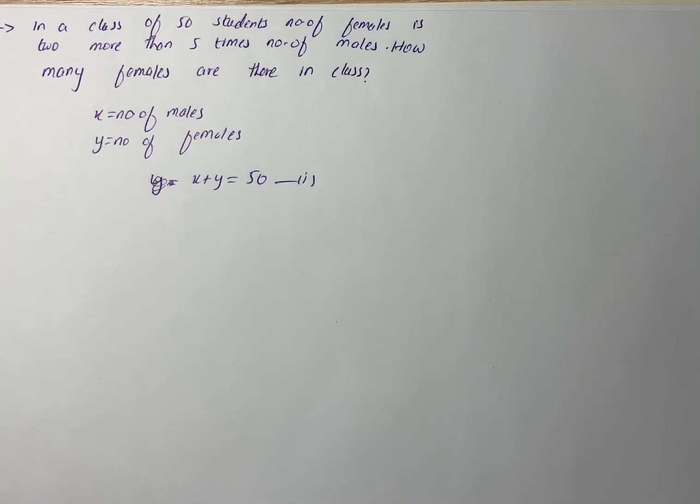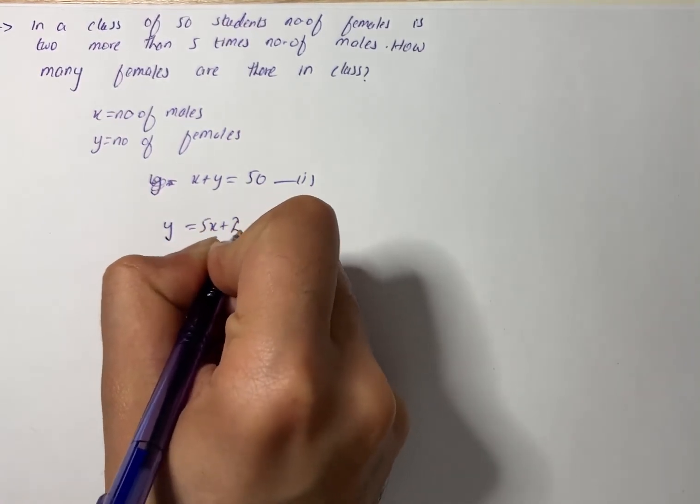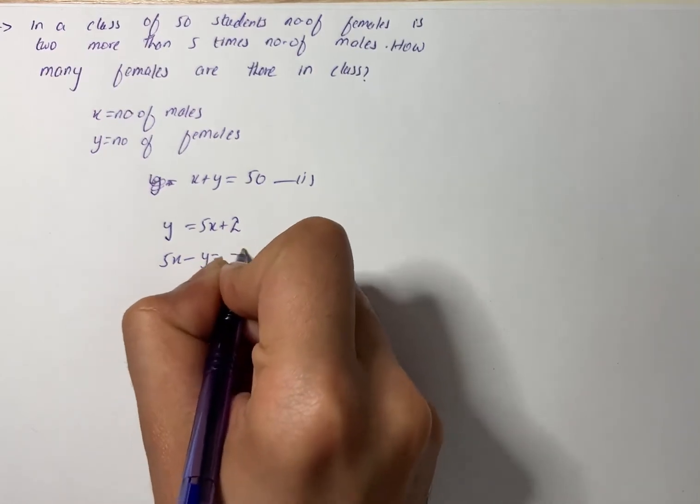The number of females is two more than five times the number of males, so we can write y equals 5x plus 2. Rearranging, 5x minus y equals negative 2. Let this be equation number 2.